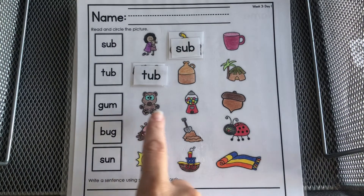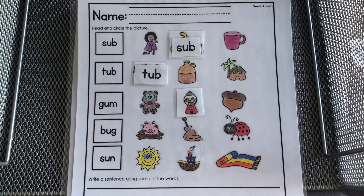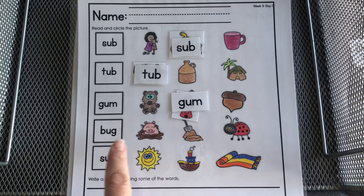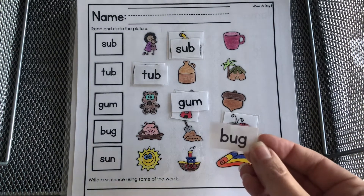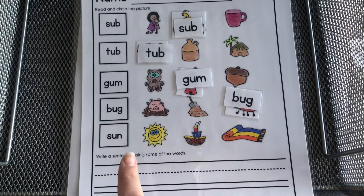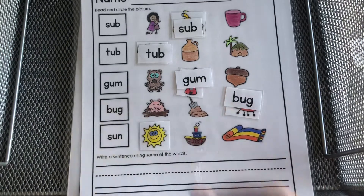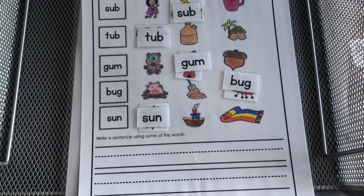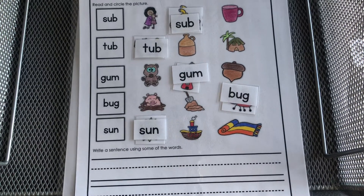Gum — where's the gum? There it is. Gum. Bug — do you see the bug? There it is. Bug. Sun — where's the sun? Do you see? There's the sun. That's right. You can go ahead at the bottom and write a sentence. It says write a sentence using some of the words. You go ahead and try and I'll get ready to see them.